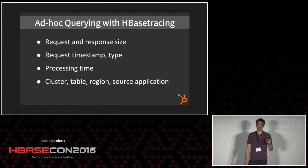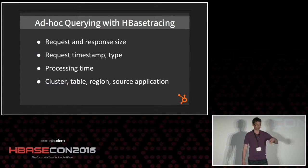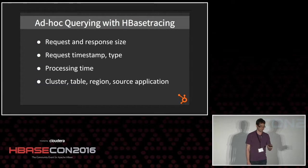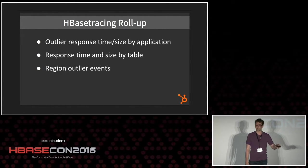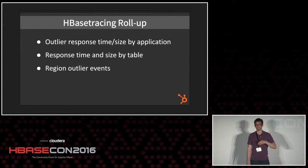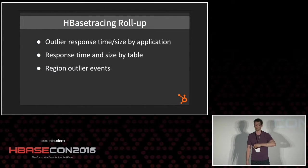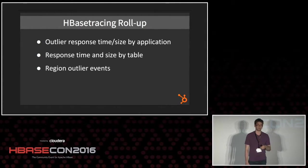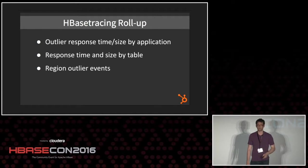The Redshift database gives us the ability to slice and dice by all these different parameters — request size, response size, time, and source and destination information like cluster, table, region, and source application, making it pretty easy to find things. As we used ad hoc querying over time, we found we were running a certain set of queries over and over. We set things out by outliers — if a region is getting huge requests, we have an event feed for those above a certain threshold. We also track large requests or response times for every application and every table.